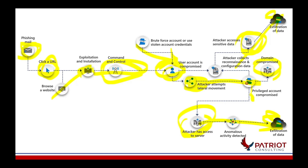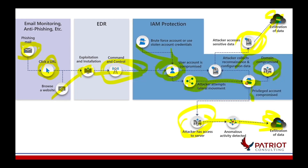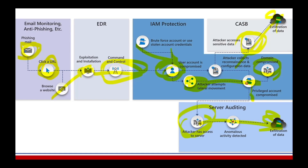The attacker compromises the domain controller, finds sensitive data, logs in as a more privileged account, and then exfiltrates data. What we typically have here is each part of this attack chain being detected by a different DR tool — detection response tools spread out across the chain. For example, email monitoring and anti-phishing tools give us alerts on the left side. Endpoint detection response tools cover endpoint-type alerts. Identity and access management protection alerts us to identity anomalies during the attack chain.